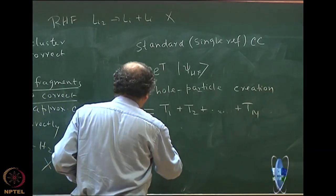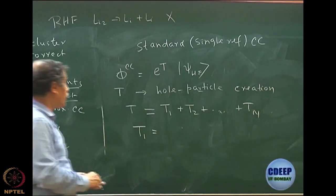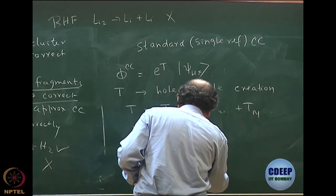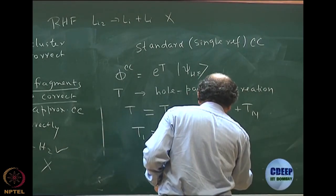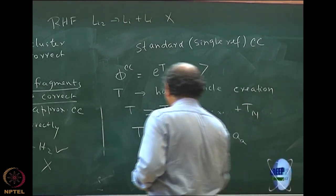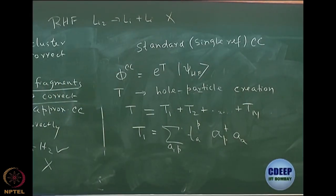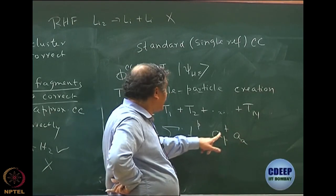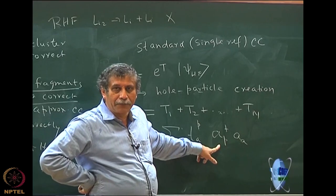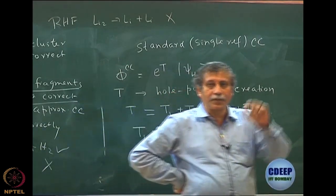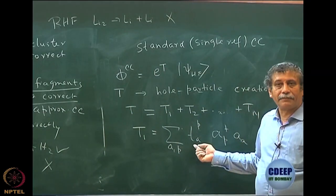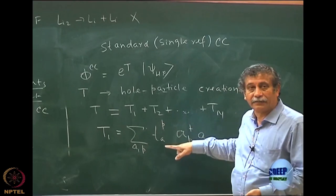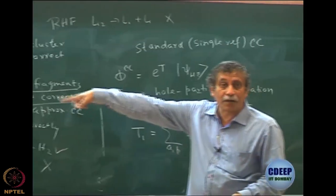So can we write what is T1 for example? It is a one body excitation operator. So in second quantization, we will write like this: sum over A, P, some amplitude, let me call it t_A^P, and a_P† a_A, correct, in operator form. So what is it doing? When it acts on Hartree-Fock, it annihilates an electron from occupied orbital A and creates an electron in unoccupied orbital P. So it generates a determinant ψ_A^P with a coefficient which is t_A^P. The coefficient is also important. So when I take exponential of T1, then you have the coefficient product, T1 square, T1 cube and those things will guarantee that product separation that I talked of.